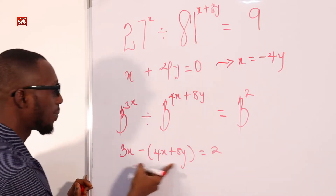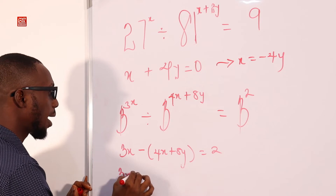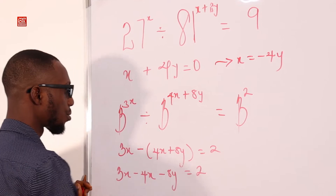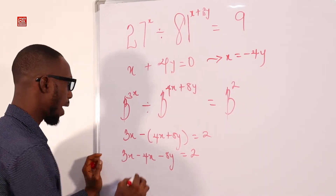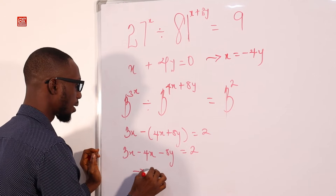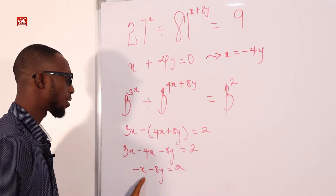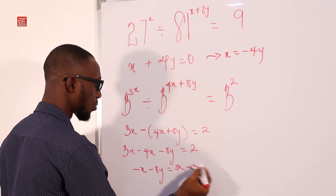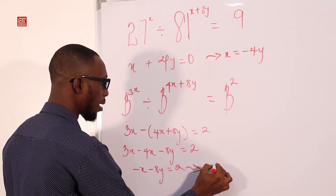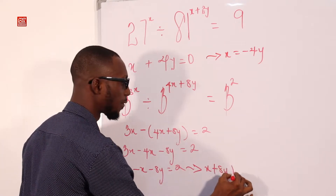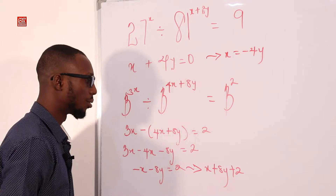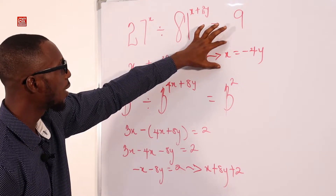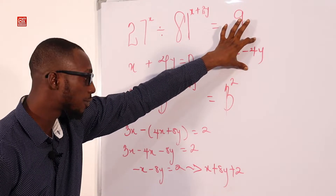Let the minus affect everything in the brackets: 3X minus 4X minus 8Y equals 2. So 3X minus 4X gives minus X. So minus X minus 8Y equals 2. Moving terms so they carry positive signs, we get X plus 8Y equals minus 2, or equivalently X plus 8Y plus 2 equals 0, where X is minus 4Y.